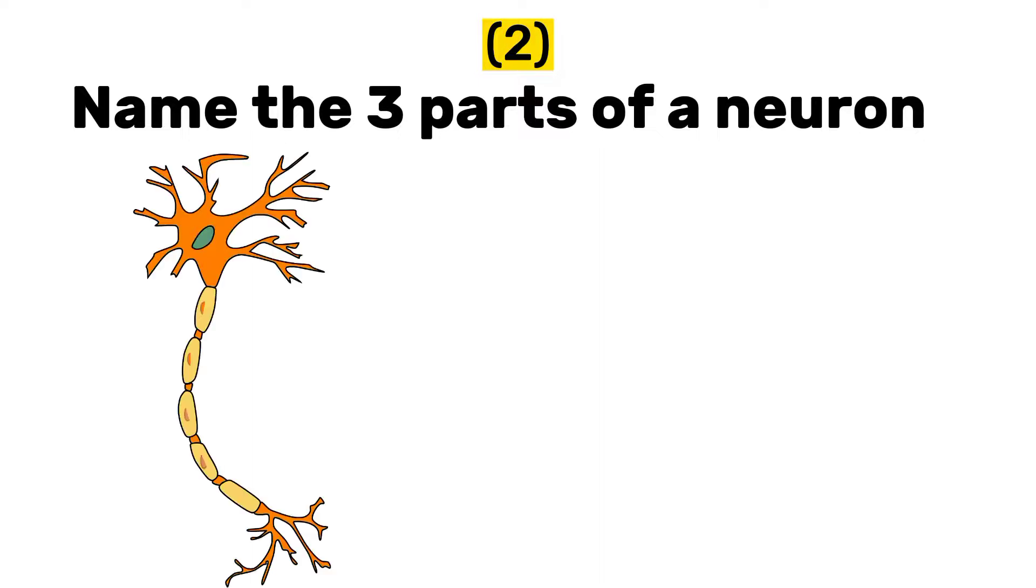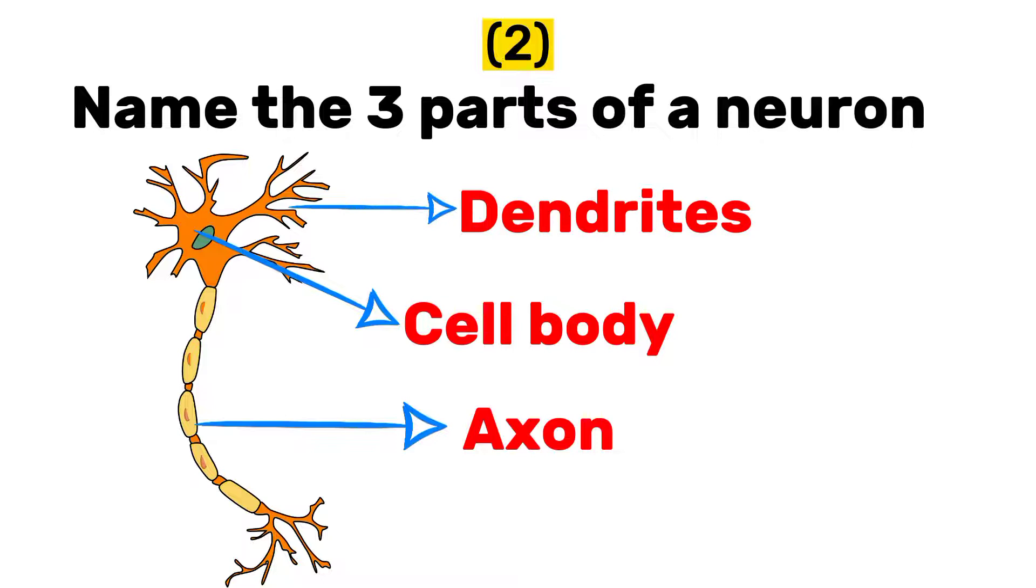The three parts of a neuron are cell body, axon, and dendrites. So these are the three parts of a neuron.